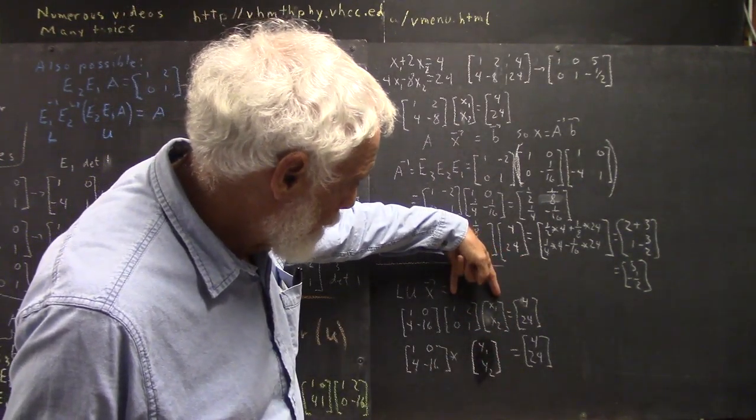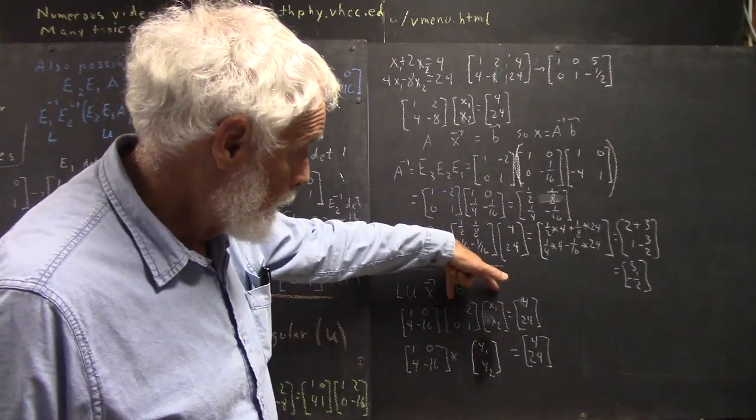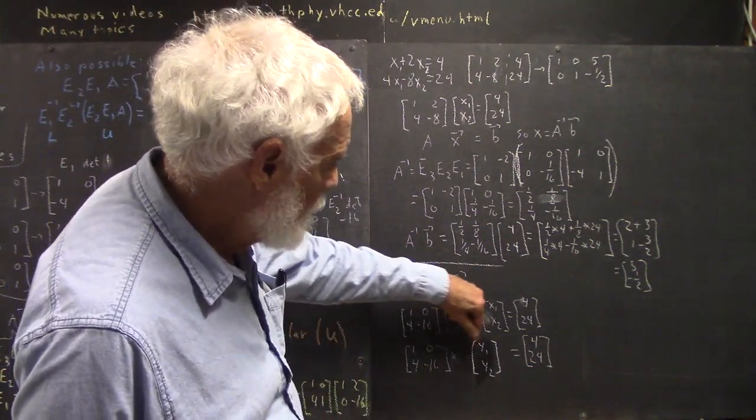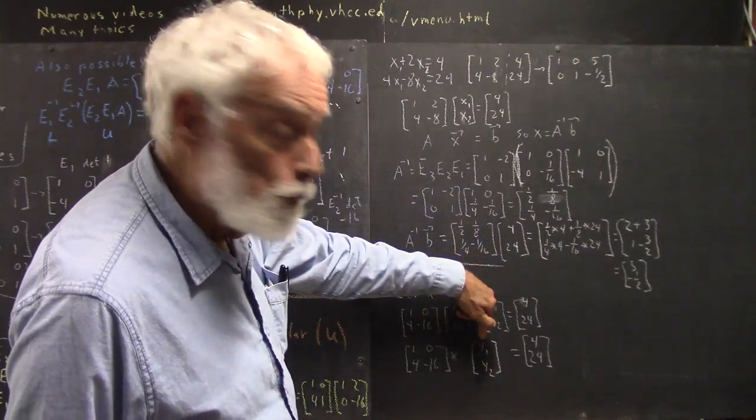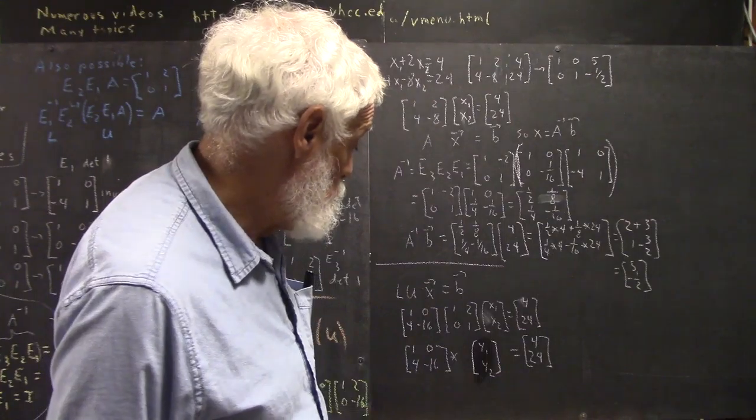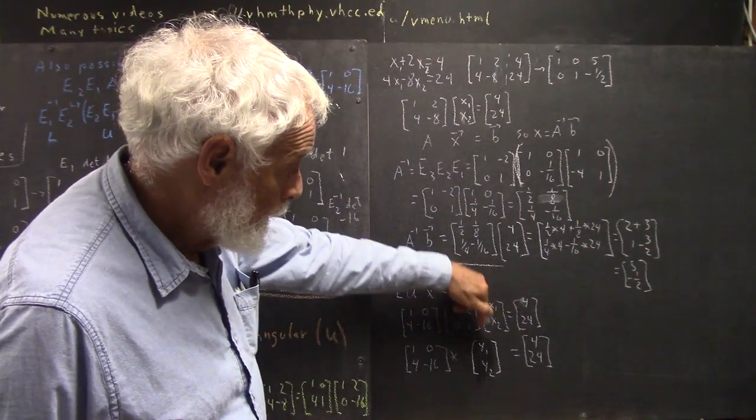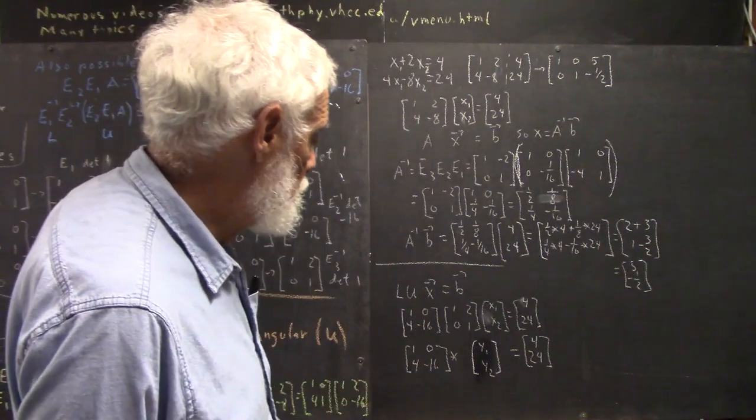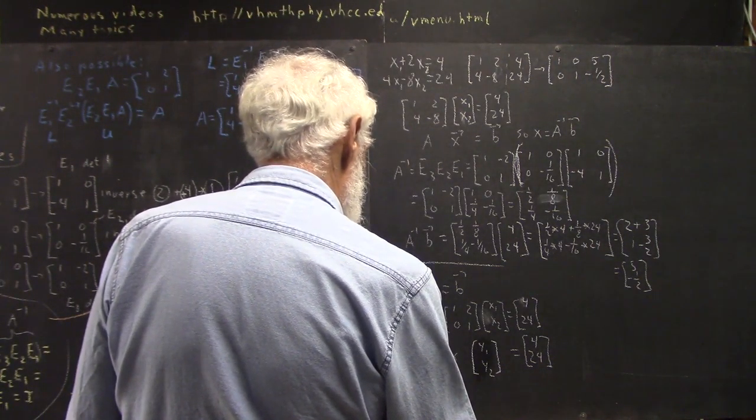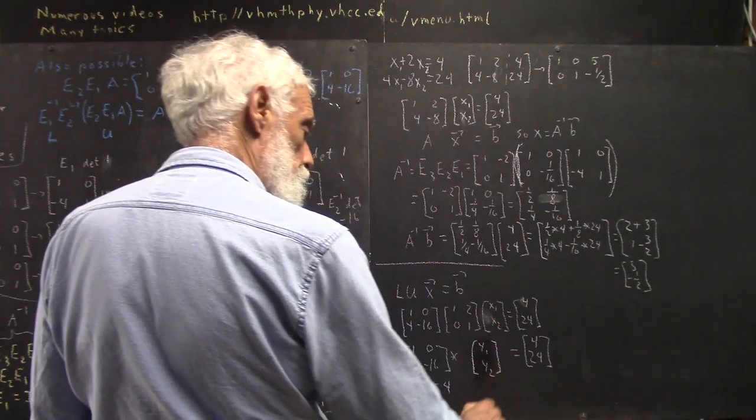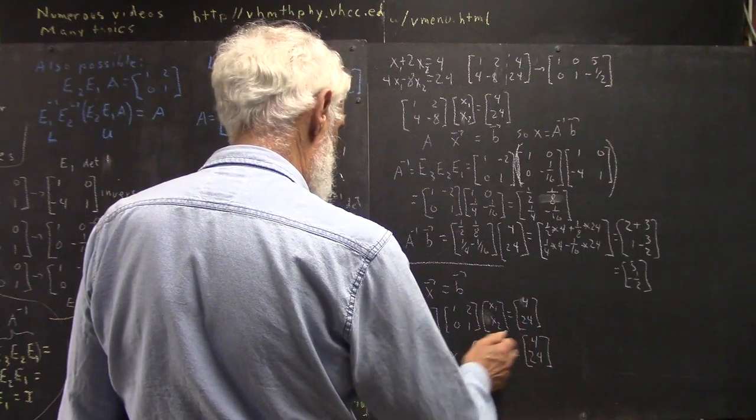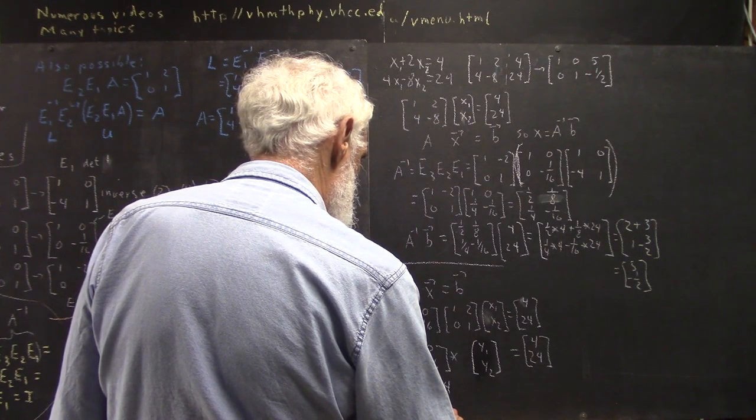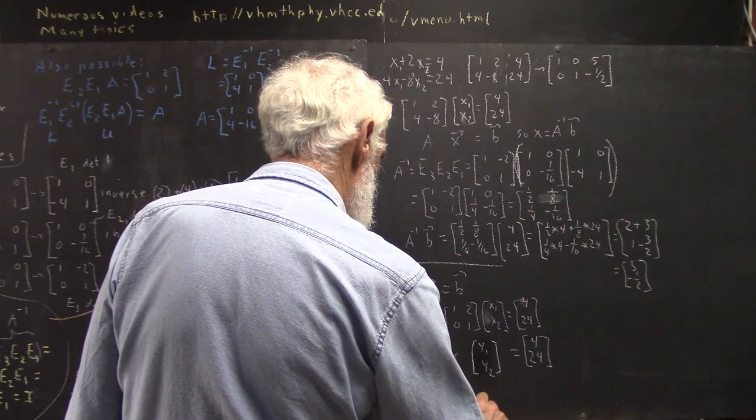But we're going to be able to solve this equation and find our Y1 and Y2. And then whatever we have here is going to equal whatever we find, and we're going to be able to solve that equation. Now, these equations are going to be easy to solve because what's 1, 0 times Y1, Y2 column? It's just Y1. And Y1 then equals 4. And then the second row times the column, that's 4Y1 minus 16Y2 equals 24.